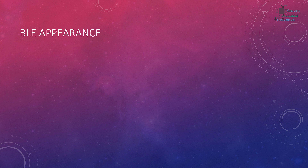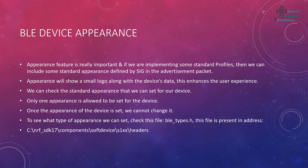Hi guys, welcome back. Today we are going to learn about the BLE appearance. Appearance is a really important characteristic of Bluetooth and it's present in the advertisement packet. I will explain why we need to include appearance and what appearance itself is. Appearance is a really important feature, and if we are implementing some standard profiles, we can include standard appearances defined by SIG — the Special Interest Group — in the advertisement packet. For example, a heart rate sensor appearance.